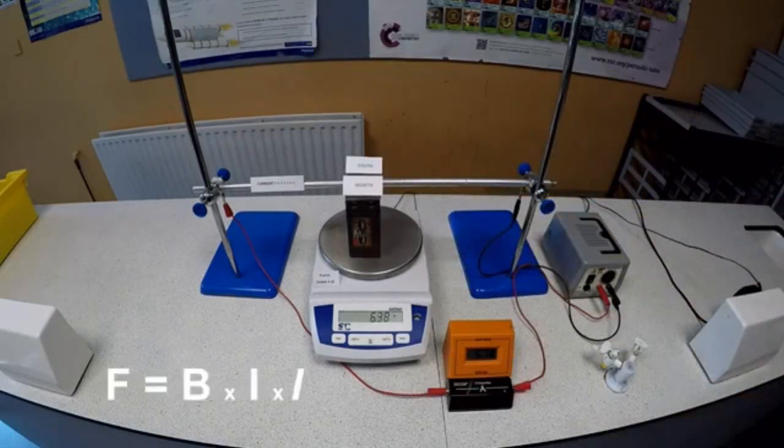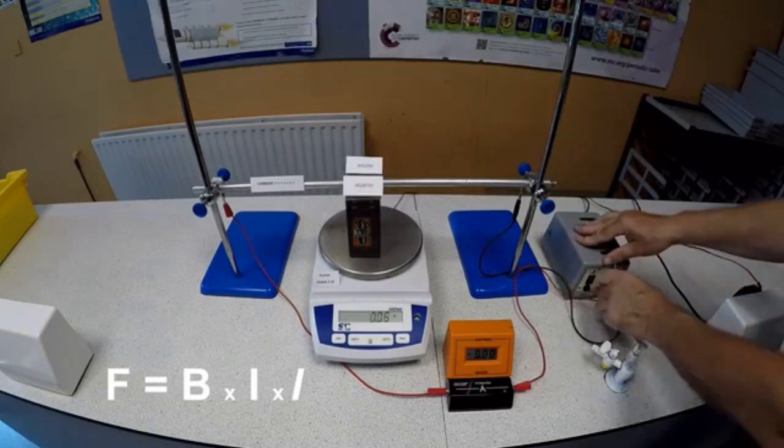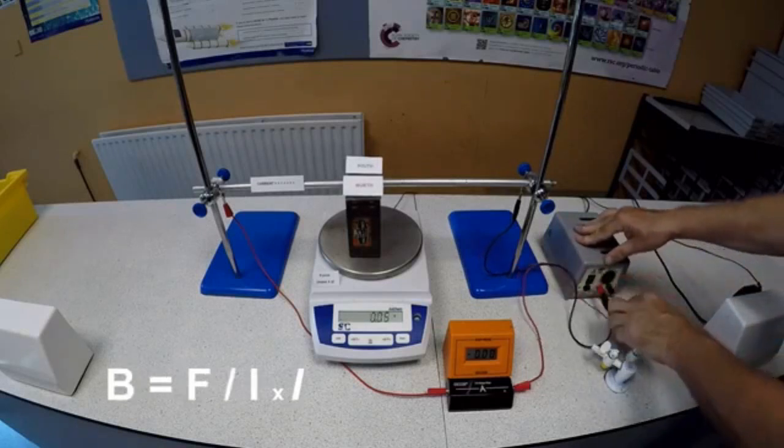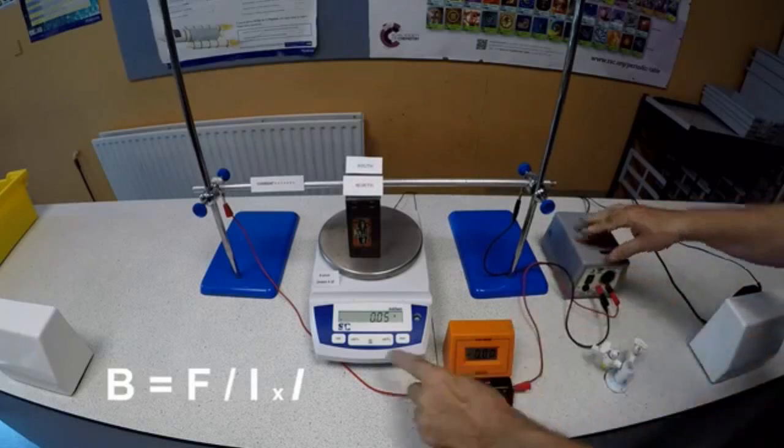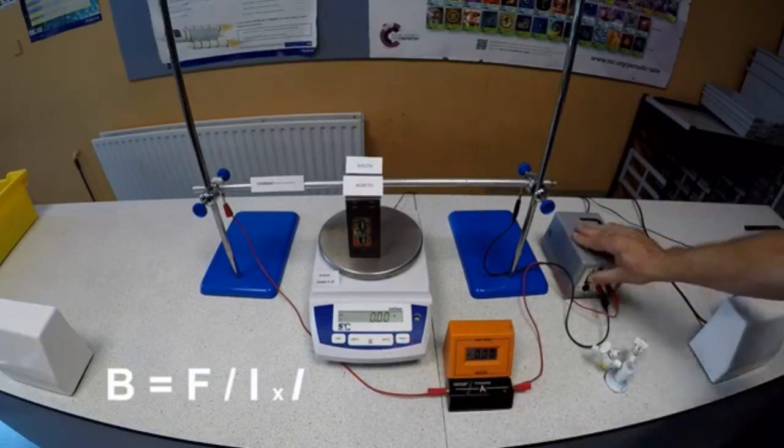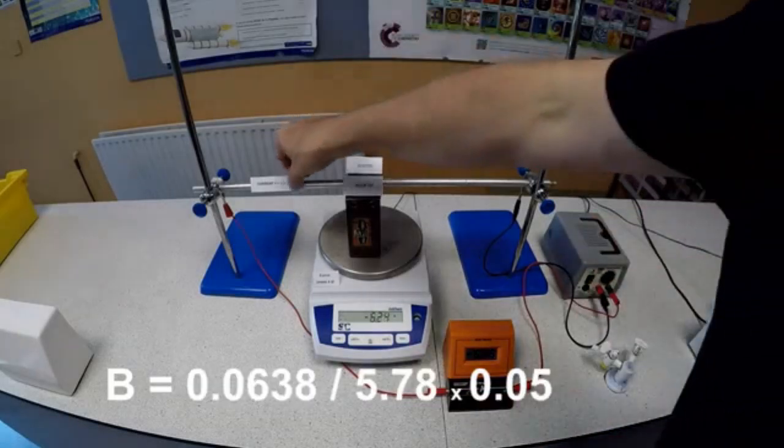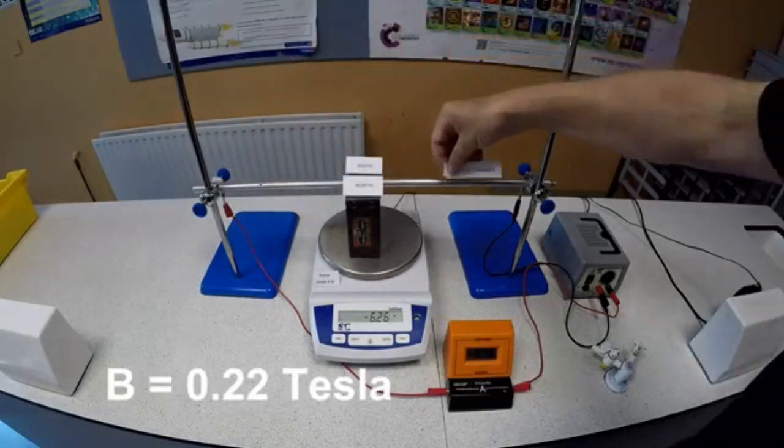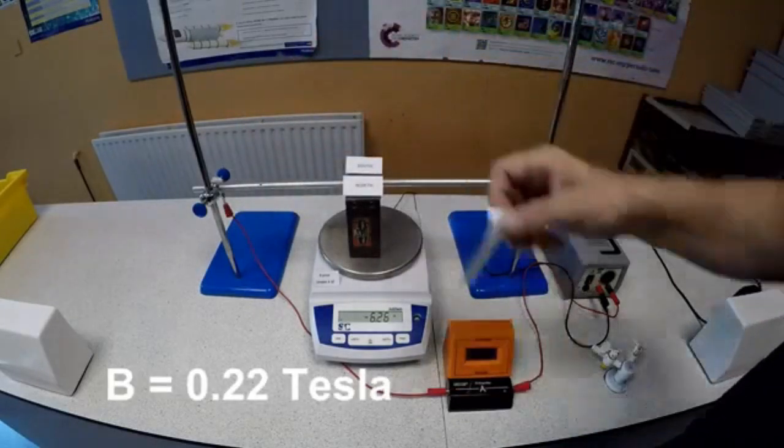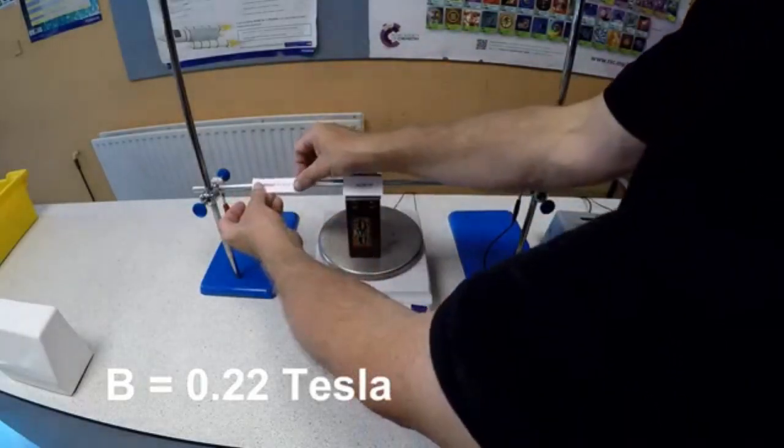Now you need to read the length of the rod actually in the magnetic field. Converting everything to SI units, that's grams to kilograms, centimeters to meters, and using the form F equals BIL, or rearranging the form F equals BIL, you can calculate the value of the magnetic field strength. There is often confusion between the symbols I and L in this formula, so be careful. It turns out that the strength of this magnet, a fairly typical laboratory magnet, comes in at about 0.22 tesla.